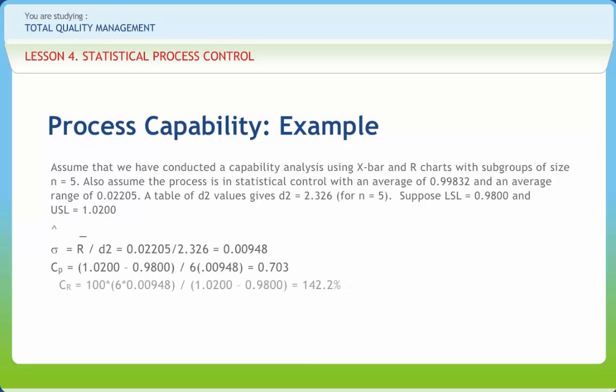Cr equals 142.2%. This implies that the natural tolerance consumes 142% of the specifications. This is not a good situation at all.